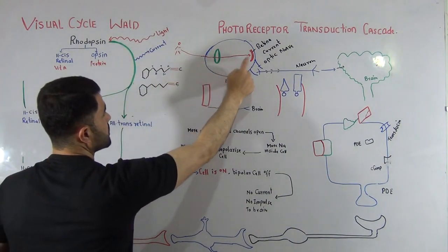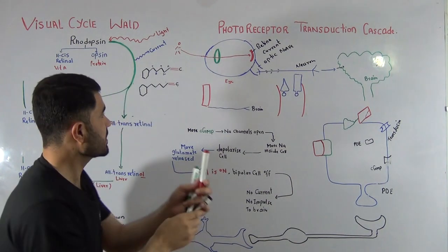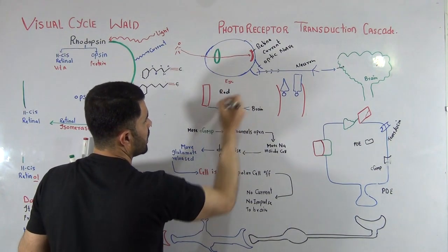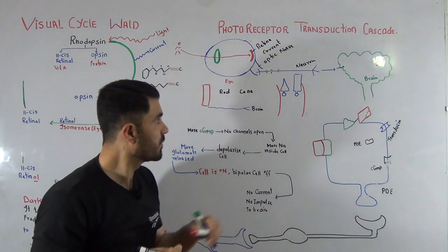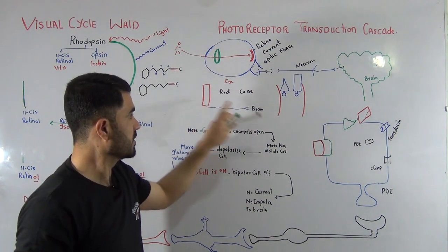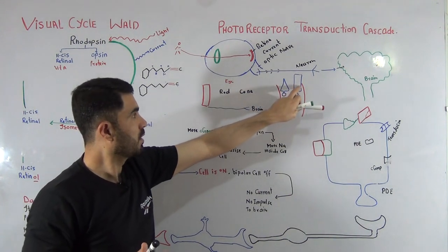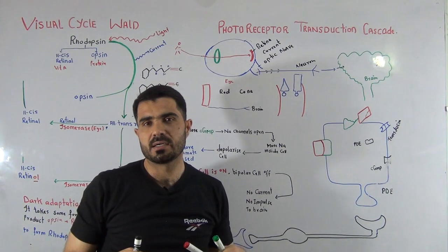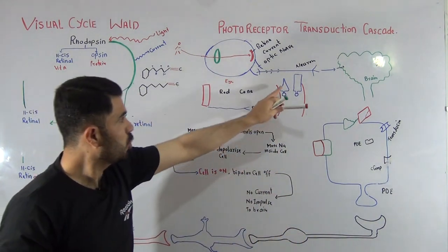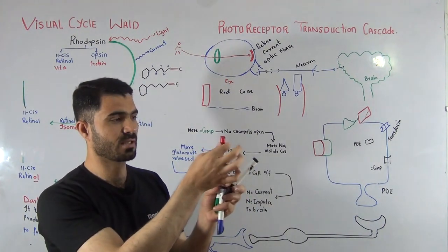Inside the retina there are two types of cells: rod cells and cone cells. Rod cells help us see objects in the dark or in dim light, while cone cells are involved in color perception. If I see a pen with a red cap and white body, that color recognition is because of cone cells.